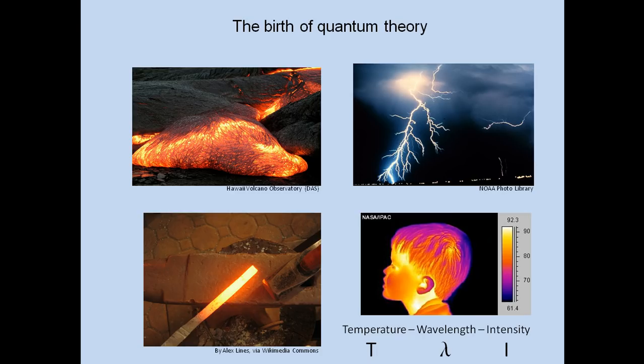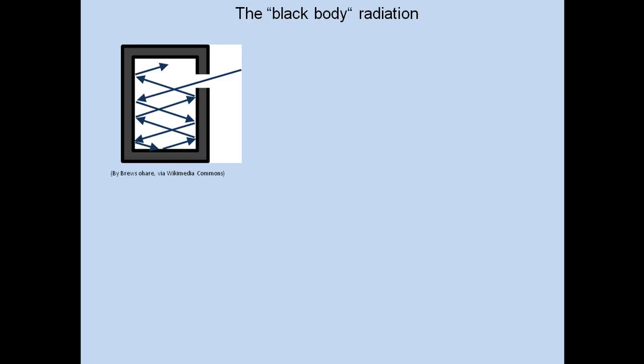So, what physicists realize is that there is a specific relation between the temperature of an object or a body, its wavelength or its wavelength distribution over the spectrum, and the intensity. Physicists had to understand what kind of relation exists between these three physical quantities, and how can we predict it?